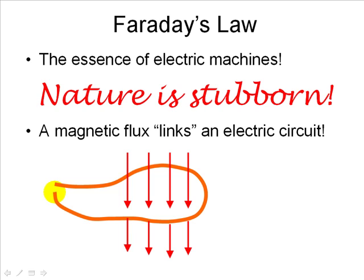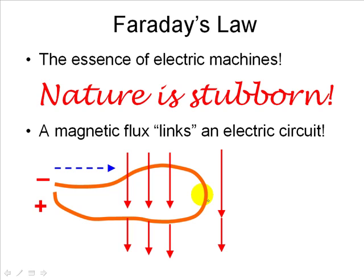Now look what happens. If I try to steal away some of the flux, Nature will have none of that. Nature will try to create a current that will compensate for the change of flux — reducing the flux outside the coil and increasing it inside to re-establish the situation it had before.